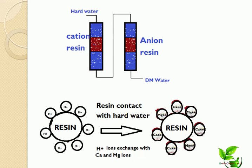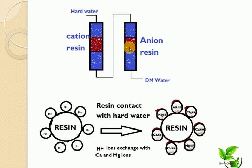In the process diagram, hard water passes first through the cationic exchange resin, where all cations are absorbed. The cation-free water, containing hydrochloric acid and sulfuric acid, then passes through the anionic resin, which absorbs all anions. The resulting water, free from both cations and anions, is called demineralized water.